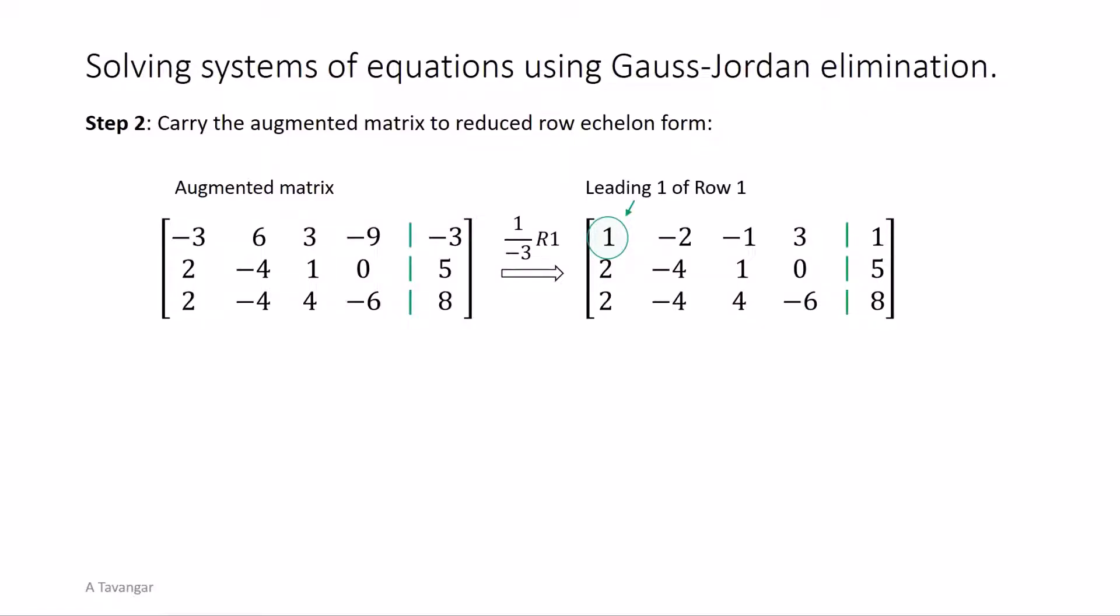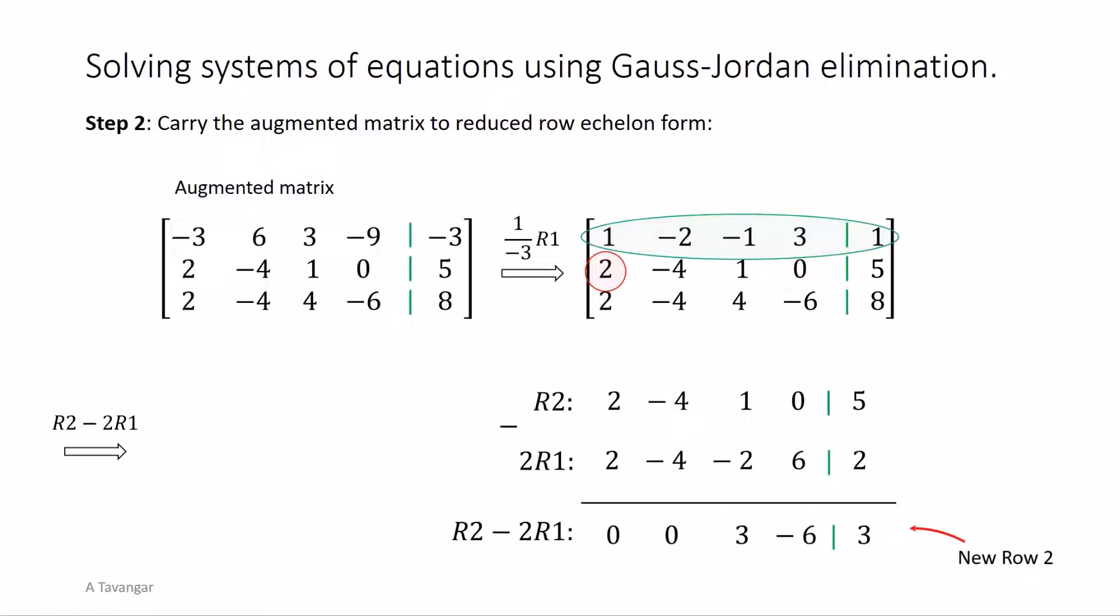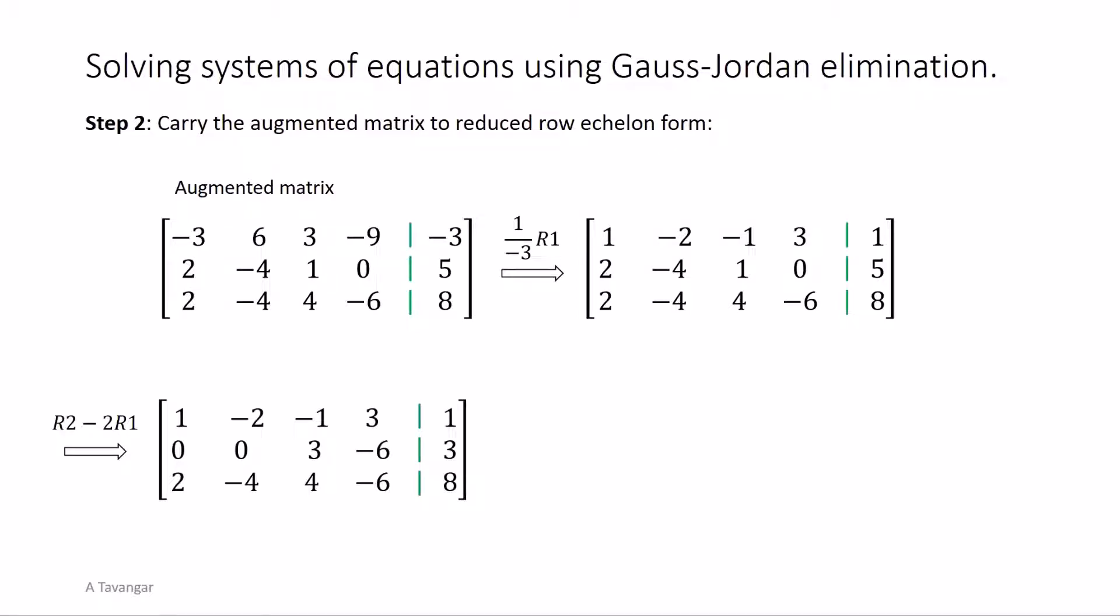Then we use this leading 1 to create zeros in the other positions in that first column. In this case there are two 2's. This is done through row operations using the first row which is the row that contains this leading 1. So we need to take 2 times the first row and subtract it from the second row and also the third row to make both 2's 0. 2 times row 1 is obtained by multiplying each entry of row 1 by 2. For subtracting rows we simply subtract the corresponding entries. This is now the new row 2 and will replace the original row 2. Next we repeat the last step and subtract 2 times the first row from the third row to make the other 2 zero. This completes the work on column 1.